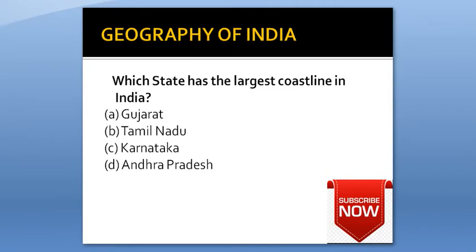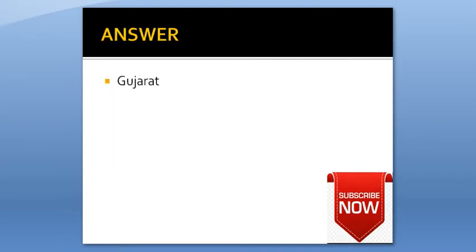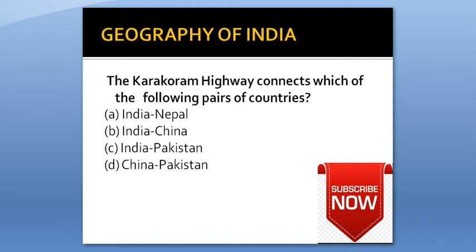Which state has the largest coastline in India? Option A: Gujarat. Option B: Tamil Nadu. Option C: Karnataka. Option D: Andhra Pradesh. Answer is Gujarat.